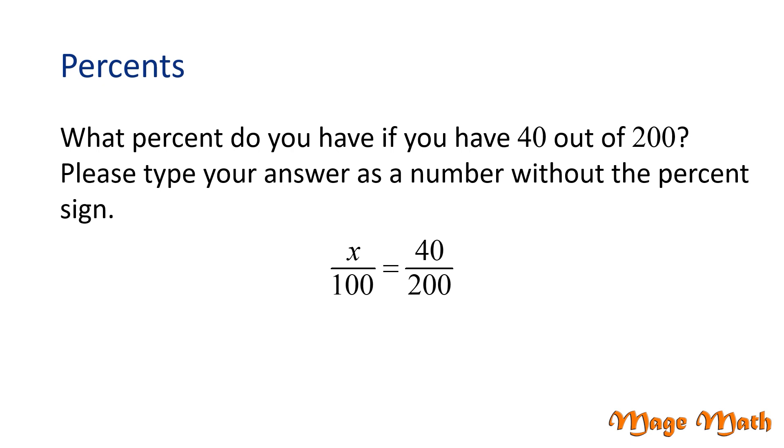These two fractions are equal to each other. Do you notice that 200 is twice as large as 100? Let's divide 200 by 2 and this gives us 100. Whatever we do to the bottom part of the fraction, we need to do to the top. So, 40 divided by 2 is 20.